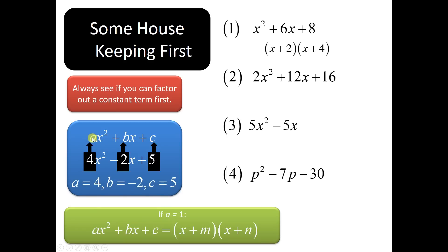If a is 1 — if the number in front of x squared is 1 — then what we're going to do is try to find a value of m and a value of n. What's going to happen is m times n will equal c, but they'll add together to make b. Like our first example here: the two numbers that multiply to make 8 are 4 and 2, and that's the right answer because they also add up to make 6. Like 8 and 1 — 8 times 1 is 8, but 8 plus 1 is not 6, so that would be wrong.